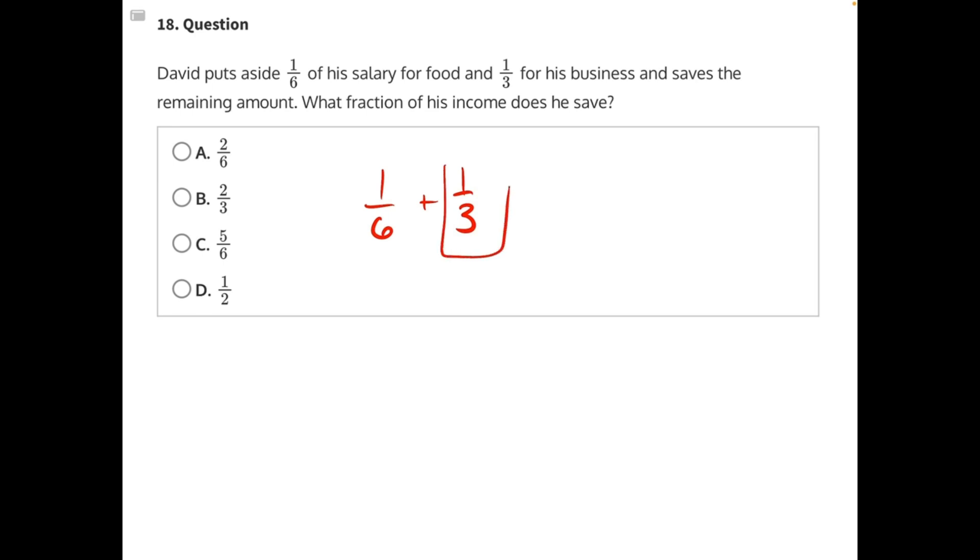Let's change this fraction to have a common denominator of six. So we'll need to multiply the top and the bottom by two, and that will give us one-sixth plus two-sixths, which will give us three-sixths.